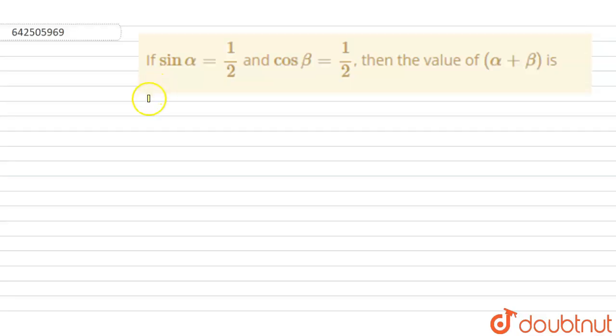Hello students, so our question is if sin alpha is equal to half and cos of beta is equal to also half, then we have to find the value of alpha plus beta. Okay, so this is an extremely easy sum. We shall start with it.